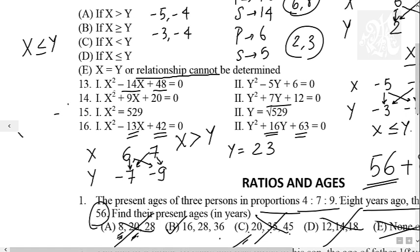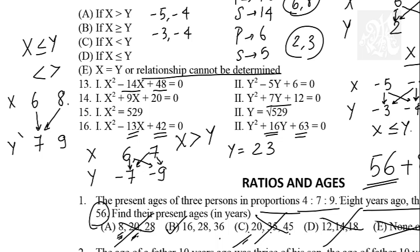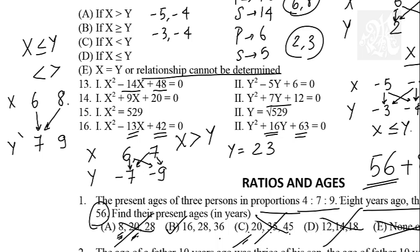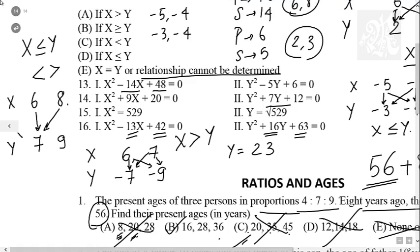There is the option 'relationship cannot be determined.' When does that happen? For example if x is 6 and 8, and y is 7 and 9: 6 < 7 but 8 > 7 — you get a less than and a greater than sign simultaneously. There is no single inequality sign that fits, so the relationship cannot be determined. When you have reverse signs in your comparisons, that's when you say the relationship cannot be determined. That's all that comes in quadratic.